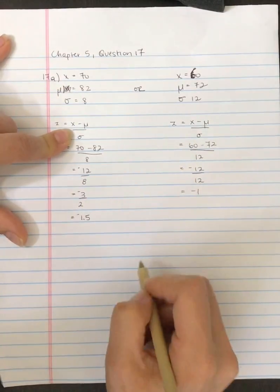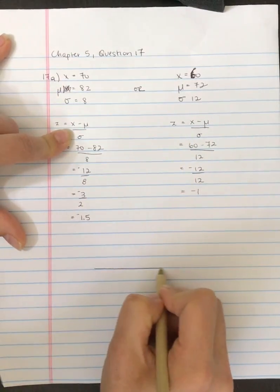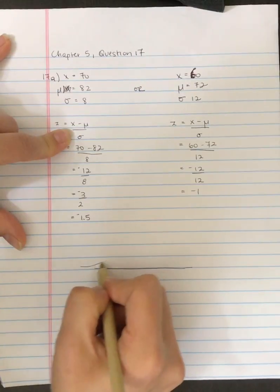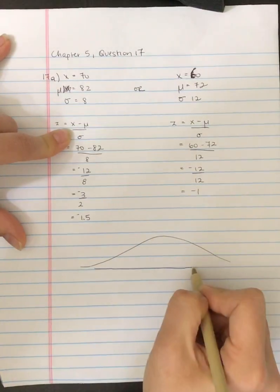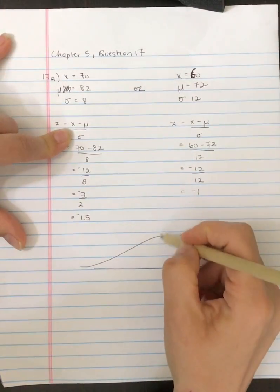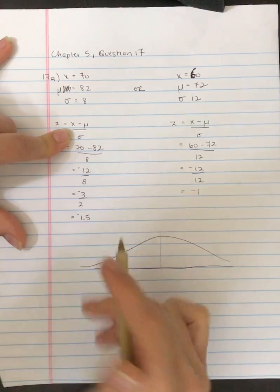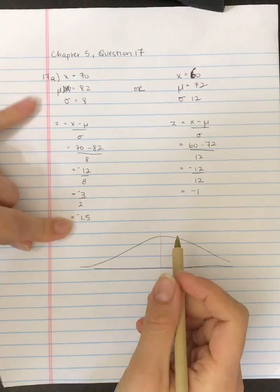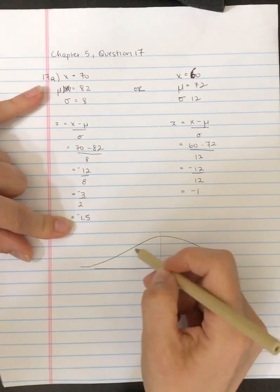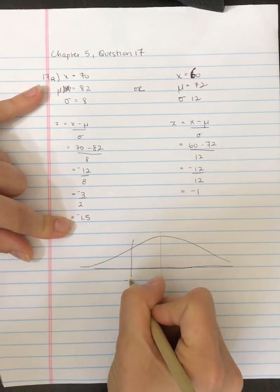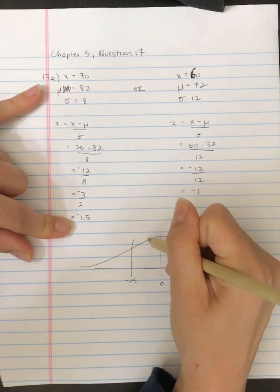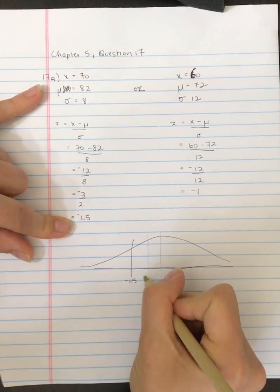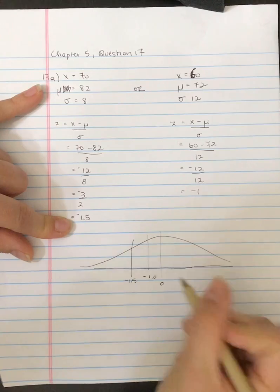If we draw this out what this looks like, we've got our mean here and with a z-score distribution the mean is 0. This first score is somewhere out here at minus 1.5 and this other score is somewhere in here at minus 1.0.